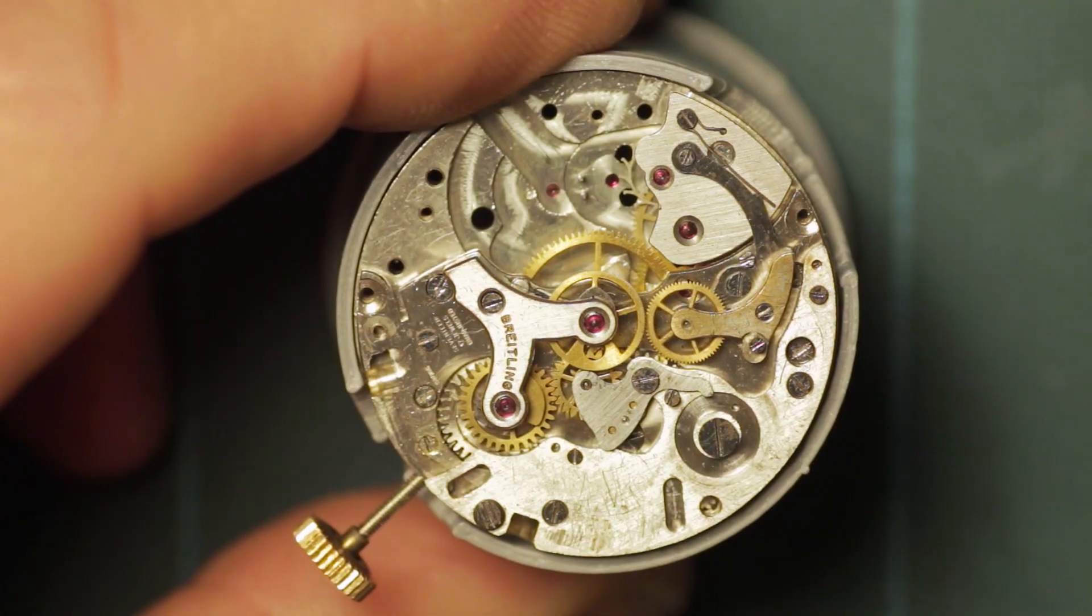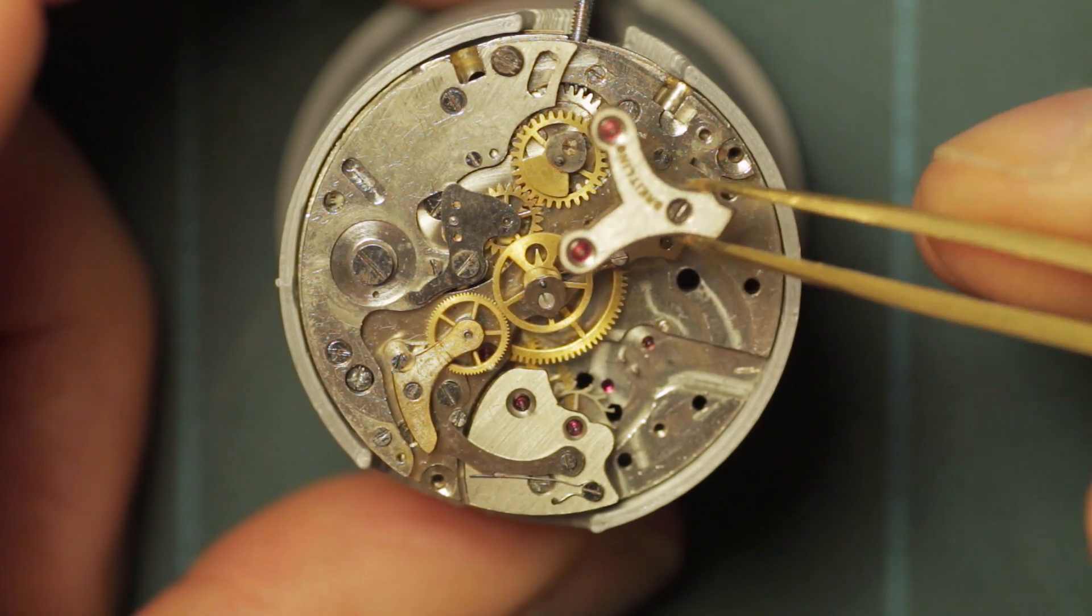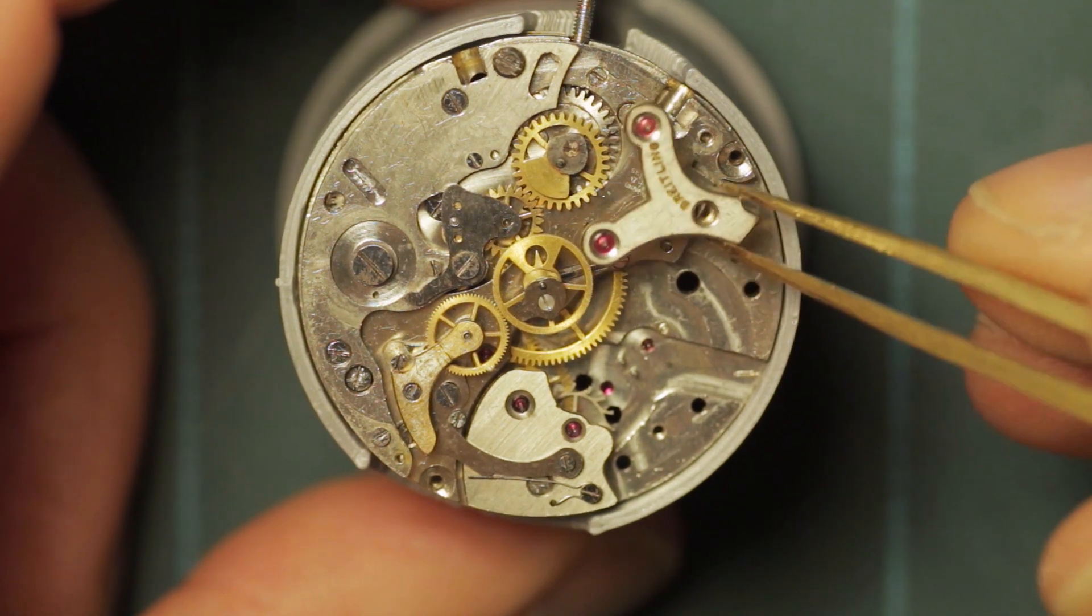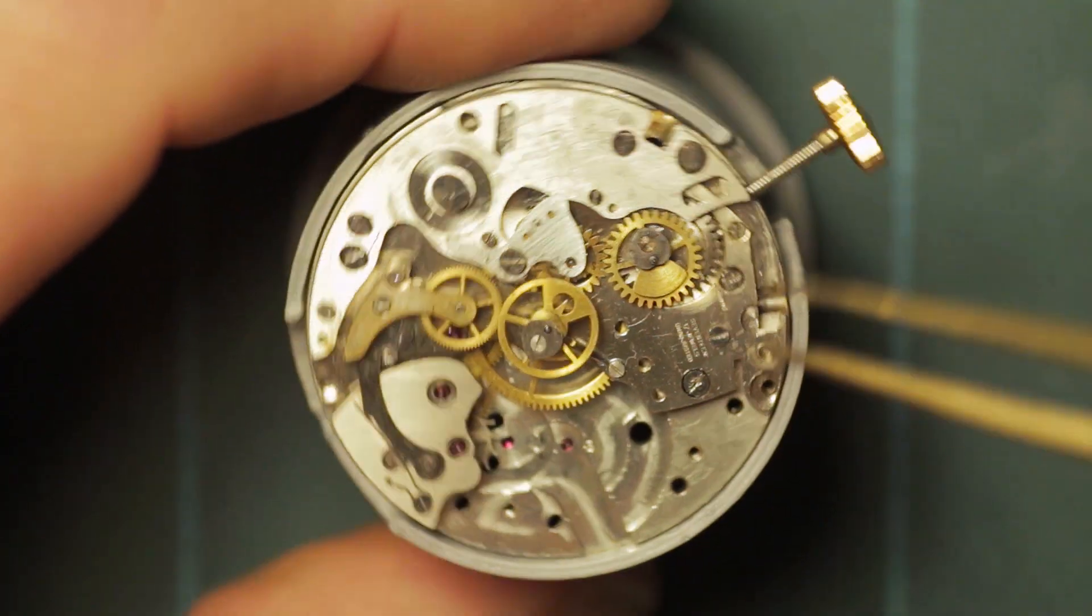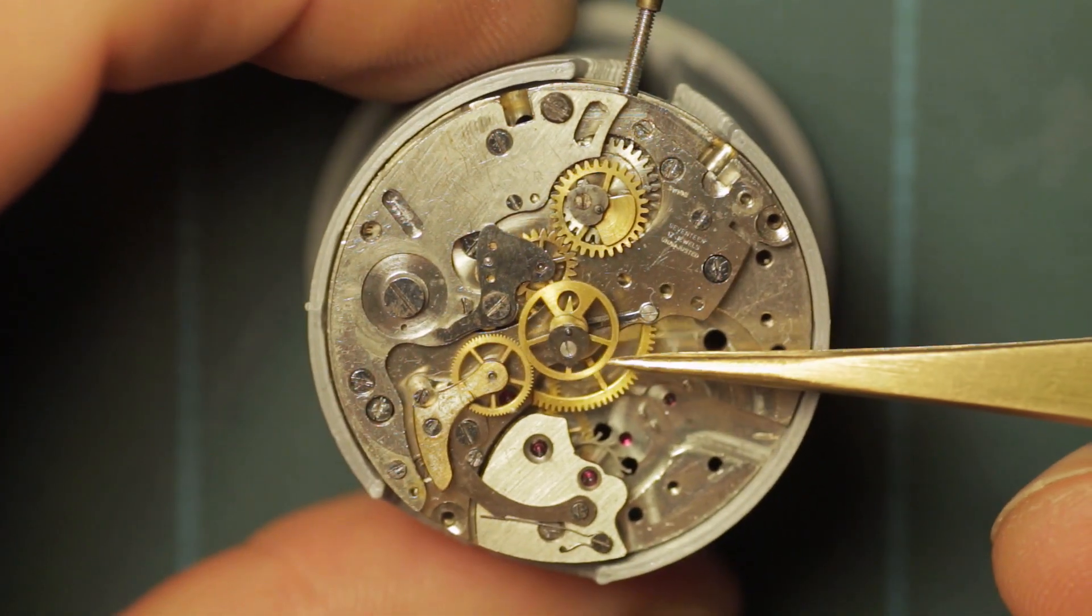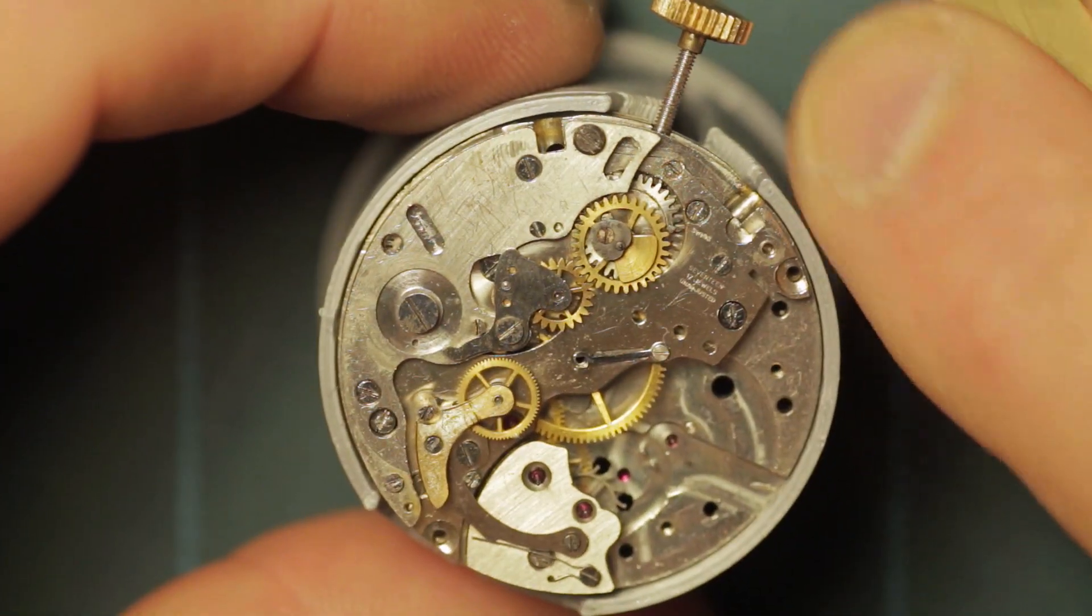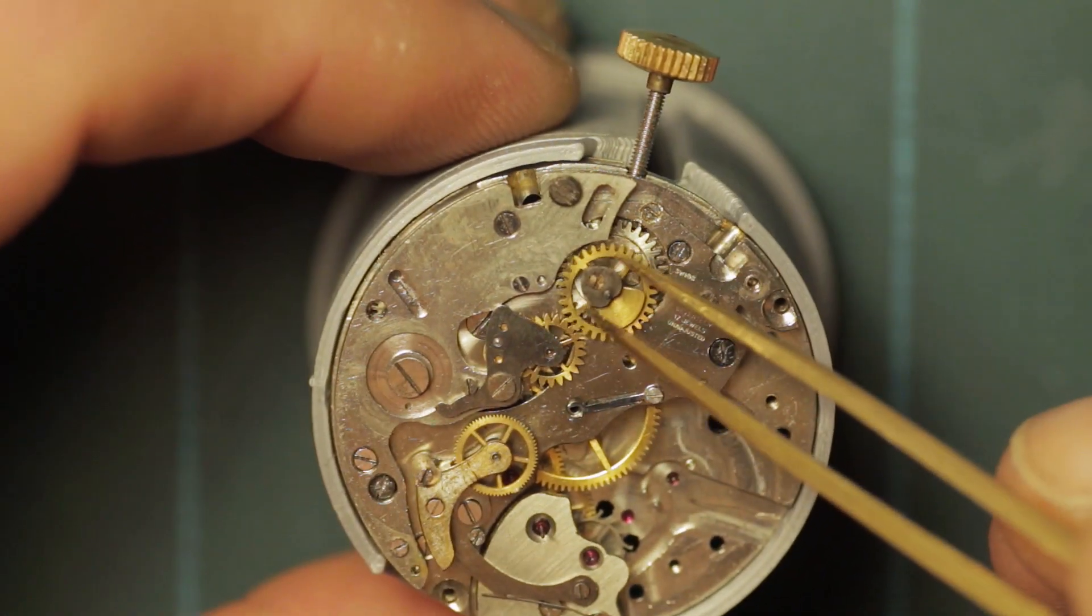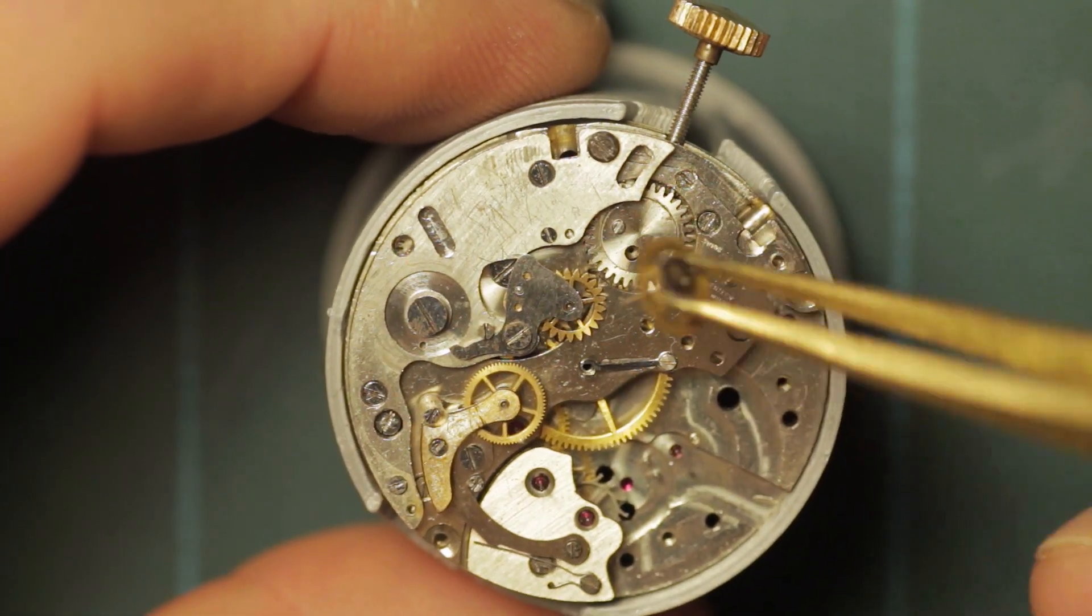With the tension relieved from there, the next thing I remove is the chronograph bridge. This being the part that bridges across the chronograph runner and the minute wheel. After which the chronograph runner and the minute wheel are removed, taking care to pull them straight up through the plate so as not to bend the pivots.